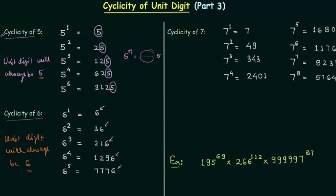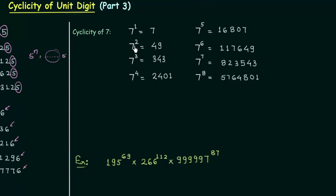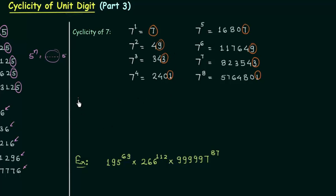Now we will move to cyclicity of 7. 7 raised to power 1 is 7, and 7 raised to power 2 is 49. We find the unit digits up to 7 raised to power 8, focusing only on the unit digit. The pattern is 7, 9, 3, 1, and then it repeats as 7, 9, 3, 1. So the cycle of 7 has 4 digits: 7, 9, 3, and 1.